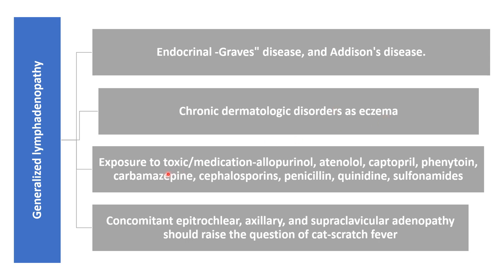If history reveals exposure to toxins or drugs — for example, allopurinol, atenolol, captopril, anticonvulsants such as phenytoin and carbamazepine, antibiotics such as cephalosporin, penicillin, quinidine, and sulfonamides — these can lead to generalized lymphadenopathy. If the patient has enlargement of epitrochlear, axillary, and supraclavicular nodes with a history of exposure to cats, then cat scratch fever should be considered.